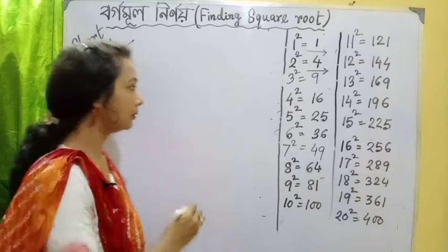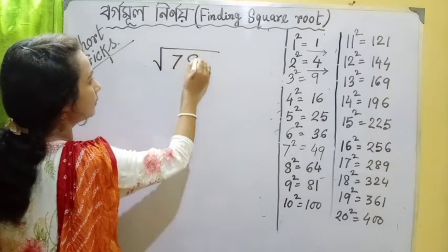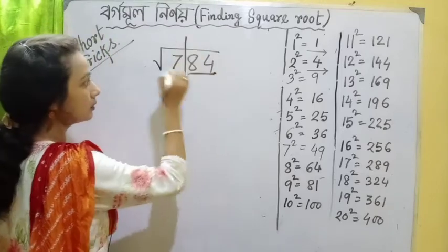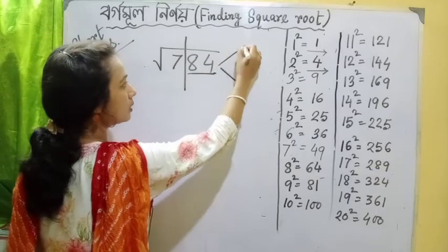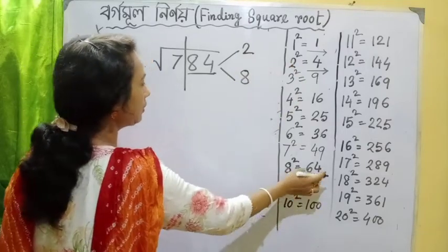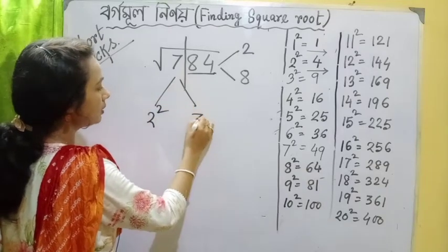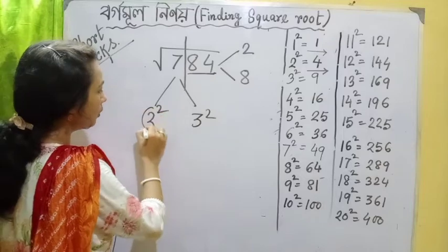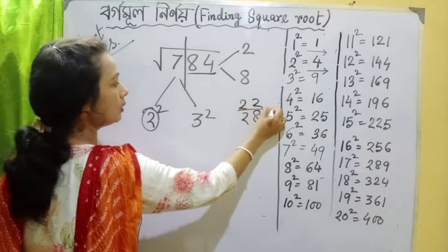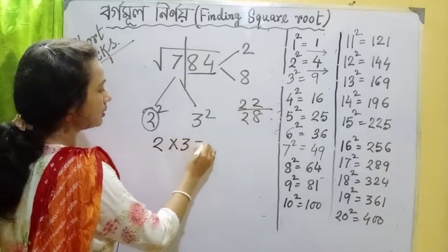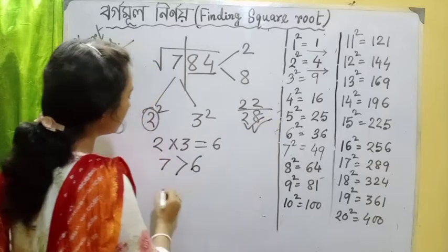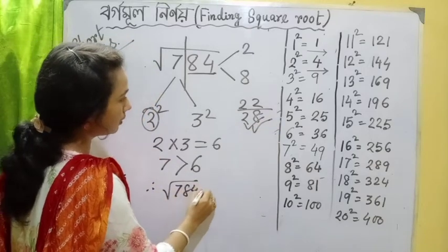Next direct example. Friends, look at 784. Last two digits separate — this is 4. That means 4. 7 equals 2 equal to 3 squared. How much is the value of 2 into the next number? 6. Here also, 7 is greater than 6. Then I choose 28. Root 784 is equal to 28.